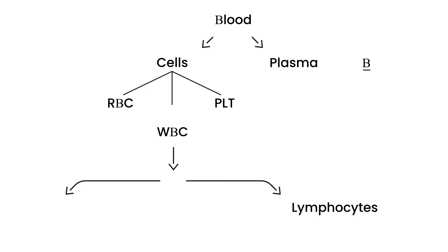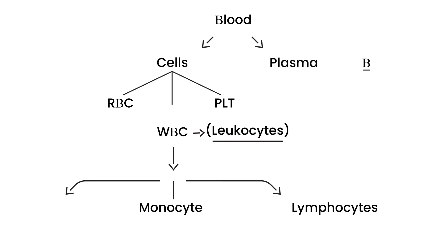That's not to be confused with leukocytes, which is what white blood cells are often referred to, meaning white. But one type of white blood cell is a lymphocyte. There are other types, monocytes for example, and so on. These lymphocytes are what we're talking about, and there are two types: B lymphocytes and T lymphocytes.